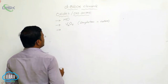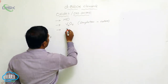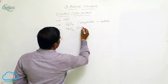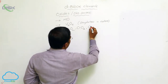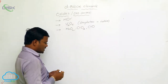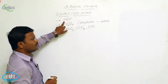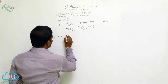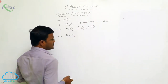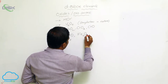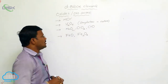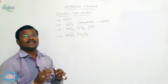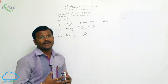Some oxides produced from the 3D series include manganese dioxide, chromium trioxide (CrO3), and iron oxides such as FeO (ferrous oxide) and Fe2O3 (ferric oxide). These represent the different types of oxides resulting from 3D series D-block elements when heated in the presence of oxygen.